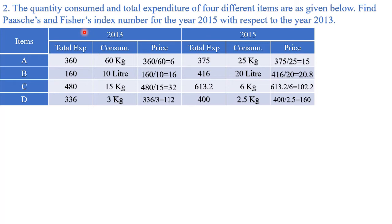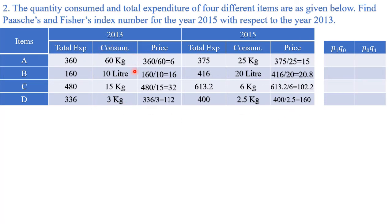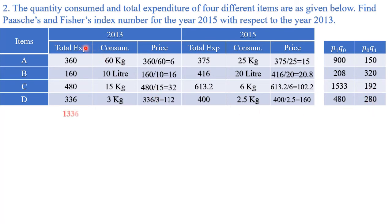Because Fisher's index number is required, we need all four values. So we will create p1·q0 and p0·q1. Current year prices multiplied by base year quantities gives p1·q0. Base year prices multiplied by current year quantities gives p0·q1. Multiply them one by one. Now make totals of p0·q0, p1·q1, p1·q0, and p0·q1.